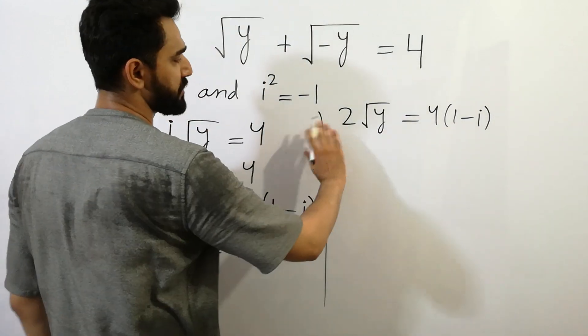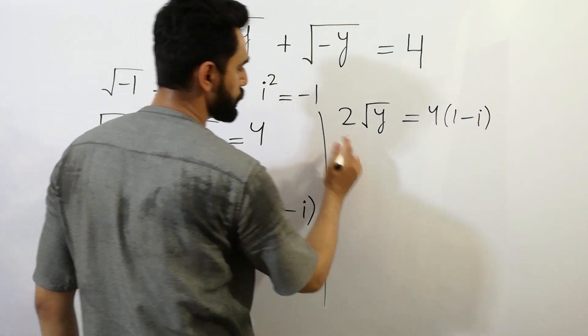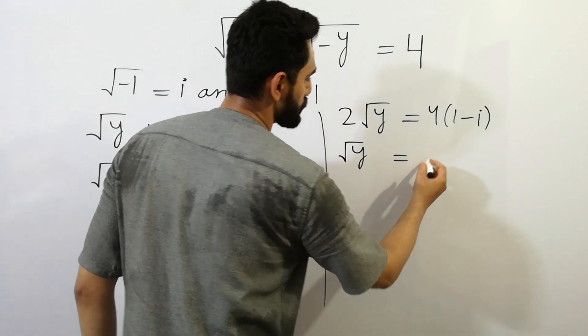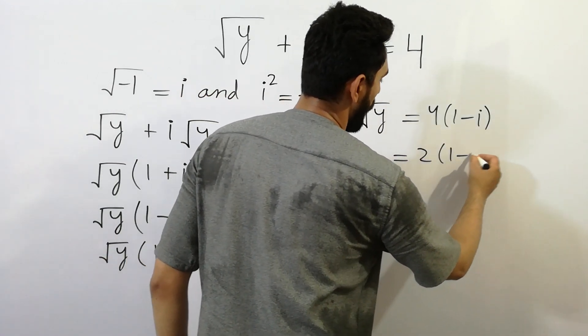Dividing on both sides by 2, we get square root of y is equal to 2 bracket 1 minus i.